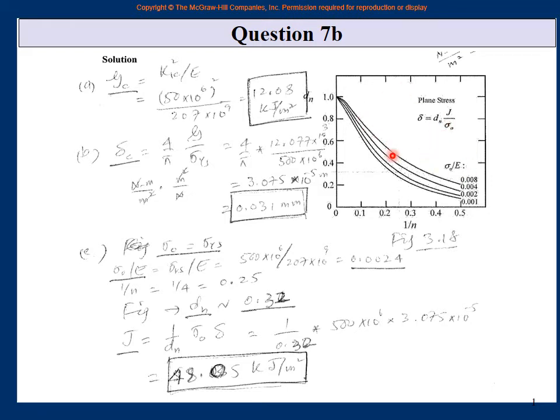Now you want 1 upon n and you want sigma naught upon E. If you have these two things then you can read the d_n from here. Sigma naught is equal to sigma yield stress. It is given that I assume that the reference stress is the yield stress. Therefore sigma naught upon E here is actually sigma_y upon E. Put the value of sigma_ys, put the value of E, you get 0.0024.